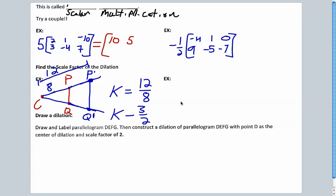This other example over here is pretty complex, we may do it together, but it's a little bit too complicated to kind of do on the video here, so we'll save that one probably for in class. This last one, draw and label parallelogram DEFG, then construct a dilation of parallelogram with point D at the center of dilation and scale factor of 2, which means we're going to make it twice the size. So let's start with a parallelogram here, DEFG.